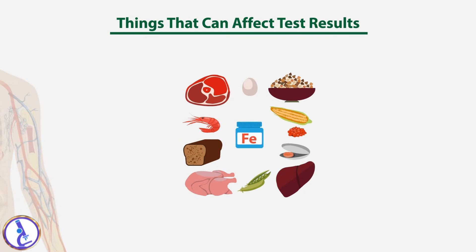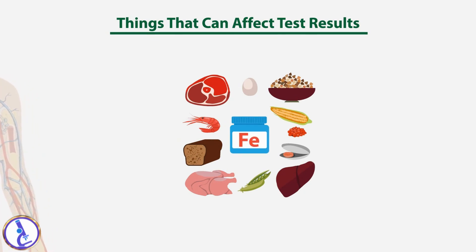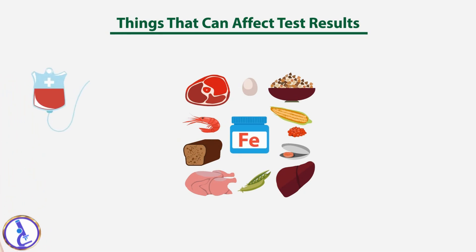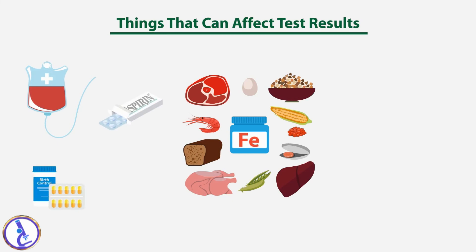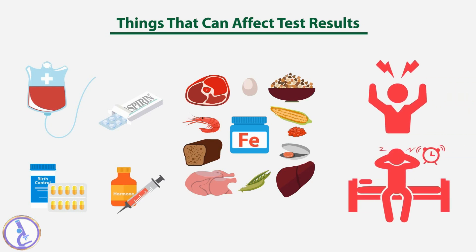Recent consumption of iron-rich foods or iron pills can affect test results, as can recent blood transfusions. Drugs such as aspirin, oral contraceptives, and hormones can also affect the test. Stress and sleep deprivation can temporarily decrease serum iron levels.